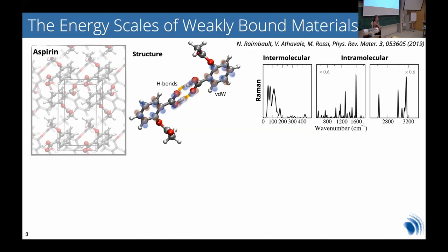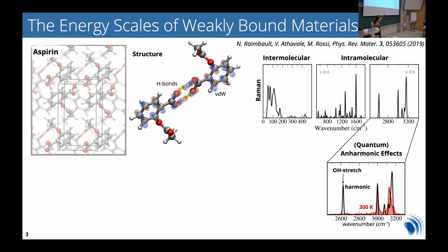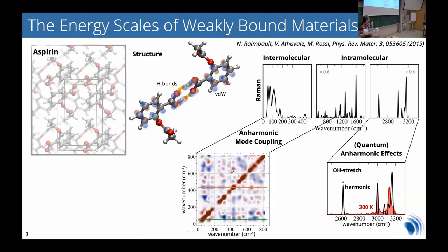What makes this energy scale interesting is that these scales are coupled. Because they are coupled, external agents such as temperature, pressure, or taking into account that nuclei are not classical but quantum particles changes the types of nuclear motions. The black line shows a harmonic approximation with all couplings switched off. The red line shows molecular dynamics with all couplings included, and an important peak like the OH stretch disappears when anharmonicity is taken into account. Correlation plots show off-diagonal signals indicating coupling between intensity changes over time.